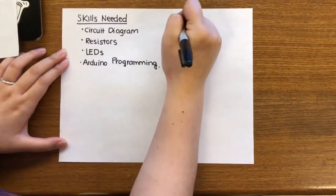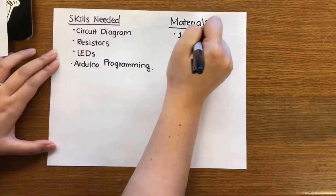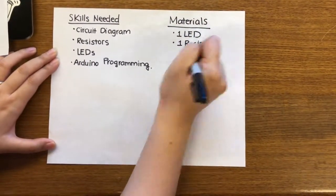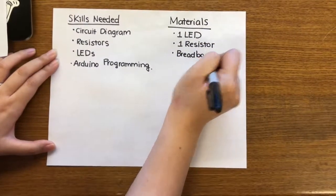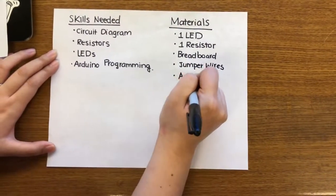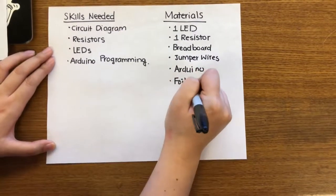The materials you're going to need to make this tamper-proof box are one LED, one resistor, a breadboard, Arduino, jumper wires, foil tape, and clear tape.